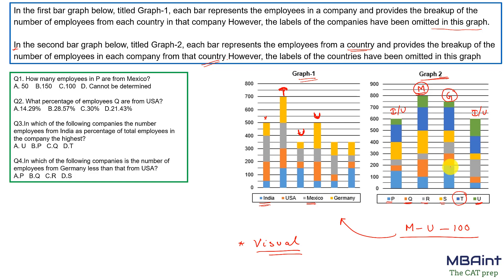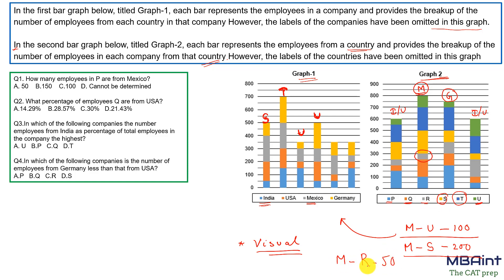The yellow region belongs to company S. From Mexico, company S has 200 employees. Checking Graph Two, the bar that has 200 for Mexico — one option is already taken by T, so the remaining one is S. Next, the gray region in Graph One corresponds to company R, with just 50 people from Mexico, matching exactly one bar in Graph Two — so that is definitely R.